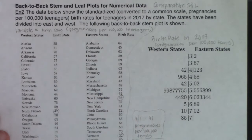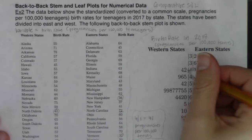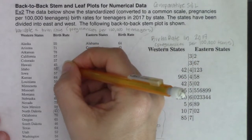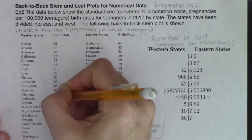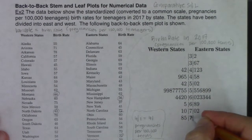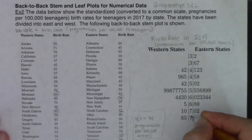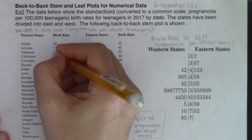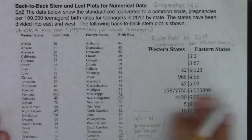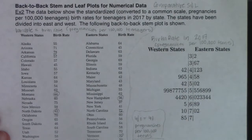North Dakota on the west side had 42 for its pregnancy rate. The next one would be 44 — let's find that state. Looks like Montana. Coming down to the bottom, the highest number had a stem of 7 and a leaf of 8. Arkansas was the highest state on the west side and actually the highest state overall, because nothing on the east side beat it.